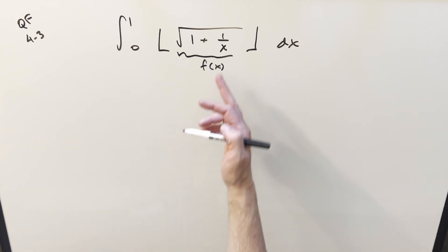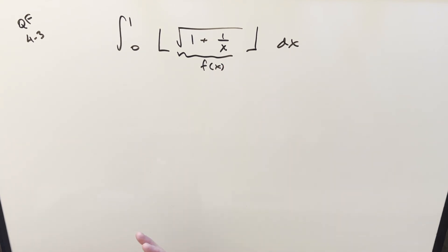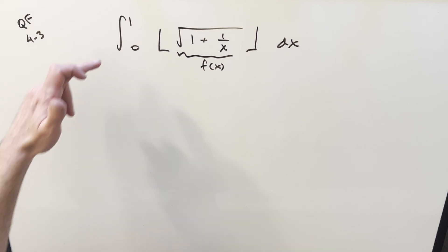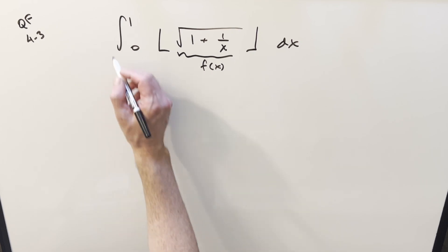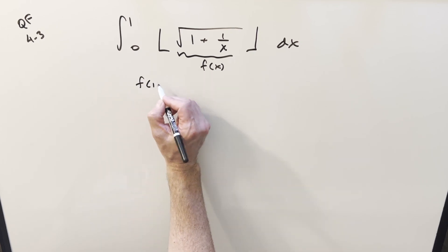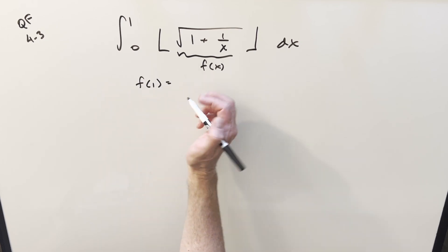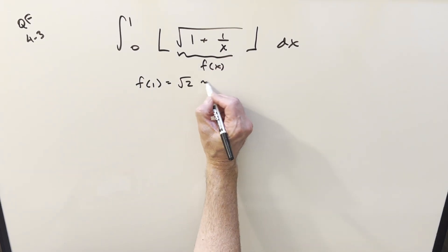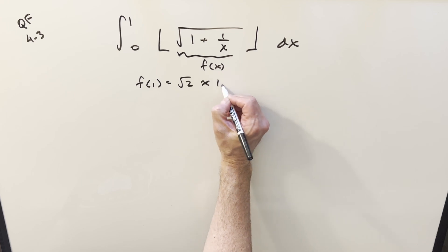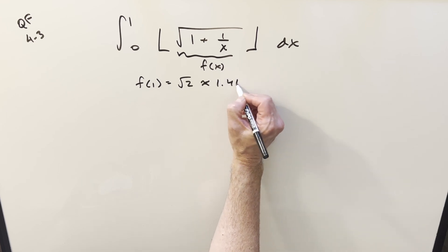Because we have 1 over x, I think we're going to be interested in the reciprocal values — 1 half, 1 third, 1 fourth, 1 over 72. But first, let's look at the endpoints. For f of 1, you plug a 1 in here, you're going to have the square root of 2, which is around 1.414.